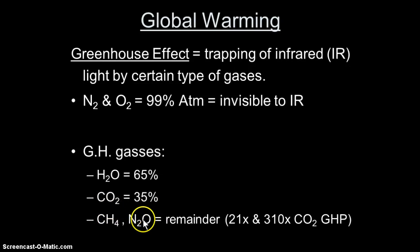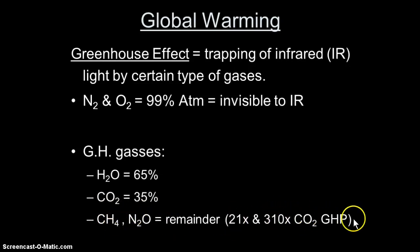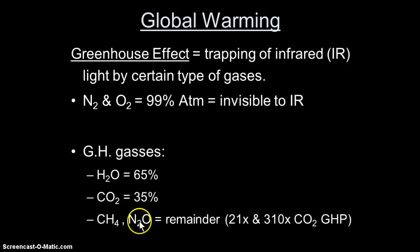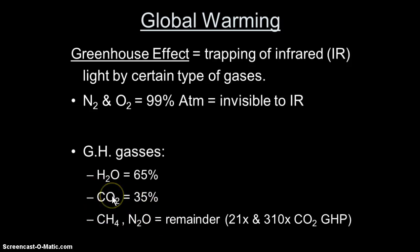Methane and nitrous oxide are about 21 and 310 times the greenhouse potential — that's what GHP stands for — as CO2. So these gases are much, much higher in greenhouse potential. If we ever increased these to the same amount of CO2 in the atmosphere, the Earth would heat up to a point that we could not live on it anymore.